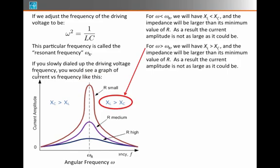When omega is greater than omega sub R, we'll have XL greater than XC, and again, the impedance will be larger than its minimum possible value of R. As a result, the current will not be as big as it could be.